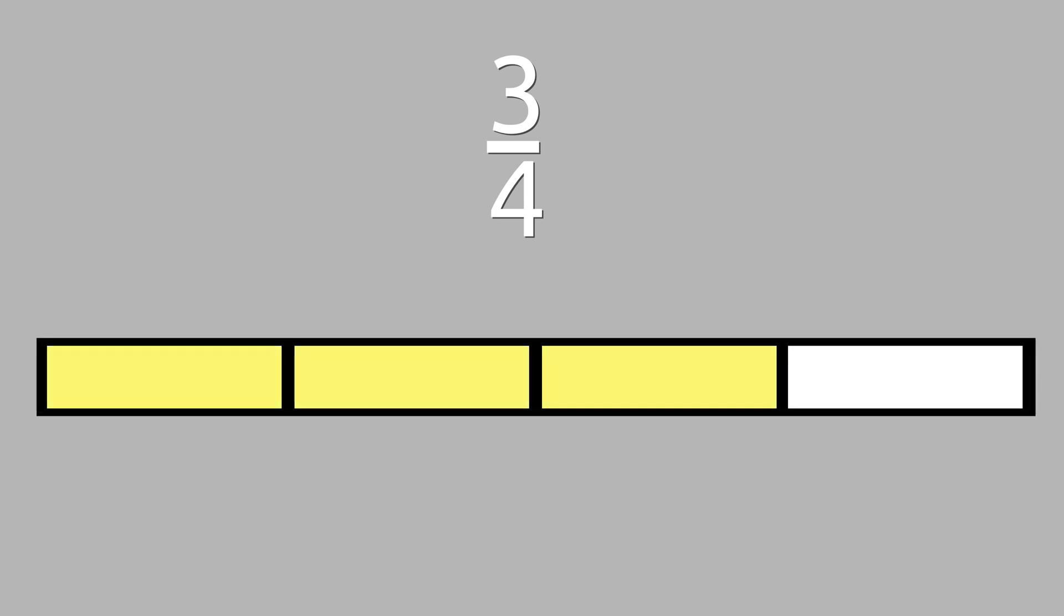We can start off by representing the fraction 3 fourths on a fraction bar. We have 3 out of 4 equal parts represented in this fraction.